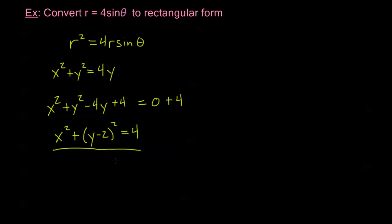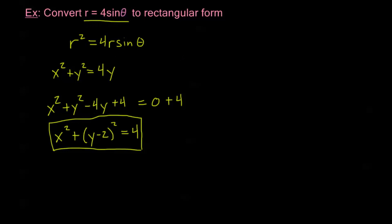So we can complete the square and identify the curve. Notice that while this rectangular equation is not particularly complicated, r equals 4 sine theta is quite a bit simpler. That's one of the advantages of polar form.